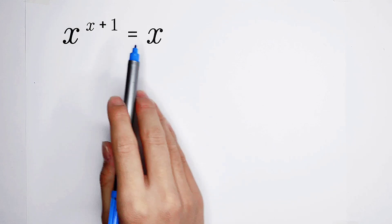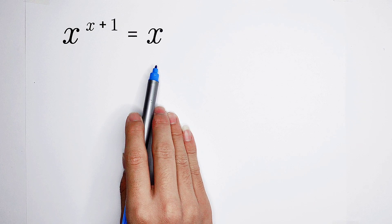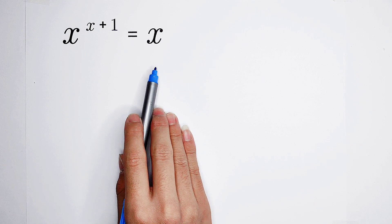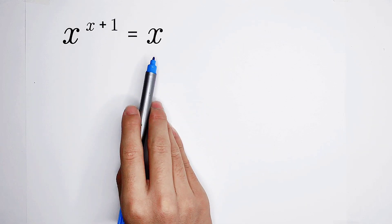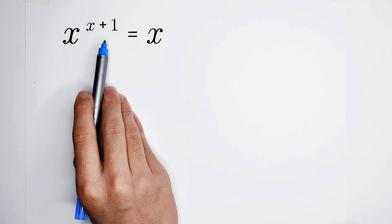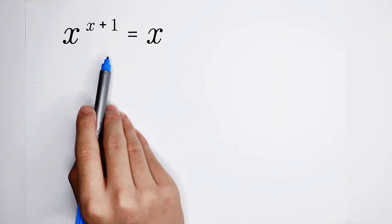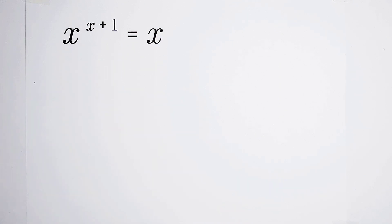x to the power of x plus 1 equals x. From where shall we start? Maybe we're going to say the left hand side and the right hand side have the same base, so x plus 1 should be equal to 1 and x is 0. A good method, but you got it wrong.